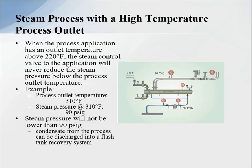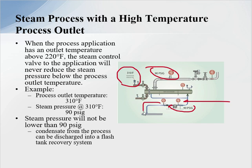The next application is steam processes with a high temperature process outlet. In this example, the process outlet is 310 degrees Fahrenheit. At 310°F, referencing the steam tables, that corresponds to 90 PSI. So the lowest pressure at the drain device at P4 is going to be 90 PSI. Therefore, I have enough differential to discharge into a pressurized return system and go into a flash tank — this is a high temperature process outlet where I can recover flash steam and send it into a lower pressure system or cascade it.